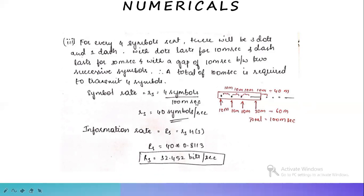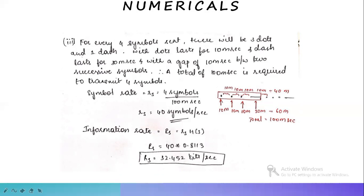So a total of 100 milliseconds is required to transport four symbols. Converting to symbols per second, the symbol rate rs equals 40 symbols per second. We have H(S) equal to 0.8113, so information rate RS equals 40 into 0.8113, giving RS equal to 32.452 bits per second.